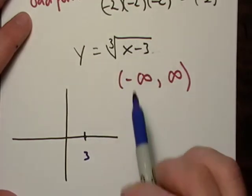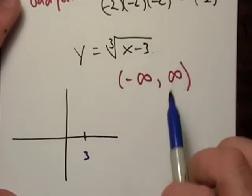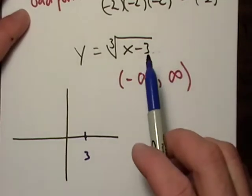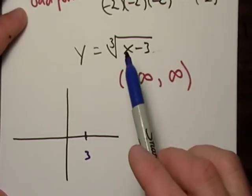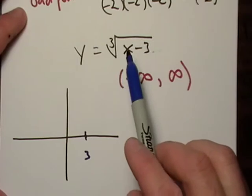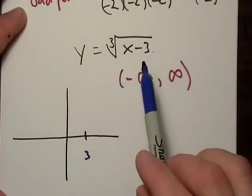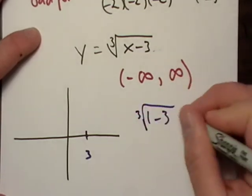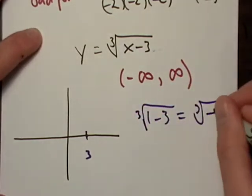I don't know, like negative 50. Then I get the square root of negative 53, or the cube root of negative 53. Well, that's also going to be a negative number. Just like if I put in 1 right here, I end up with 1 minus 3. Okay? Let's do that.